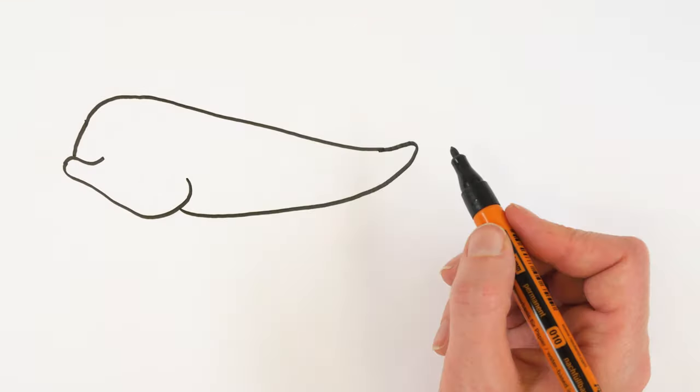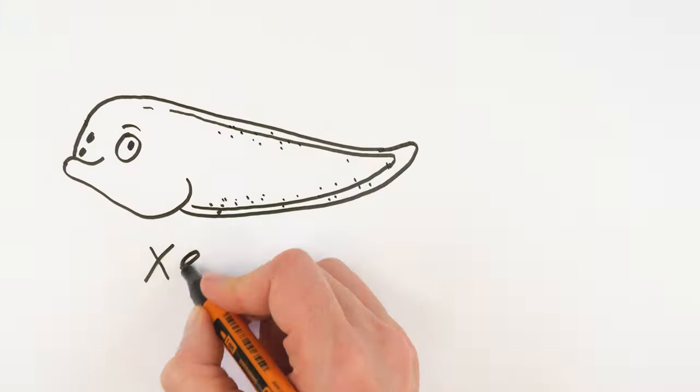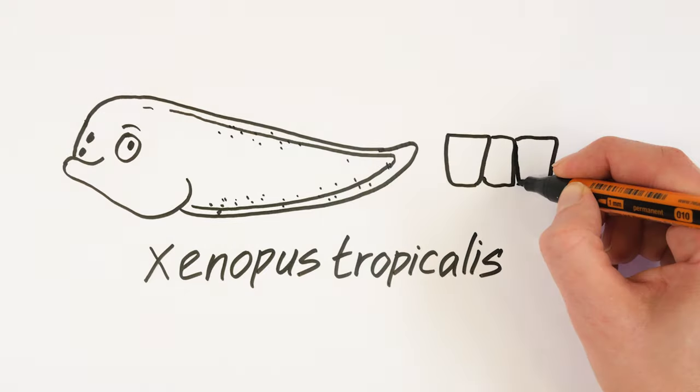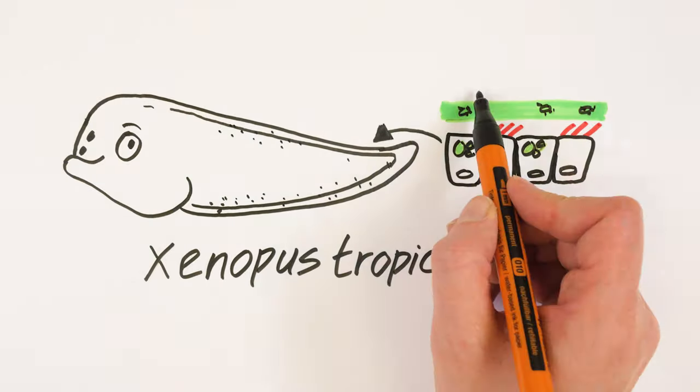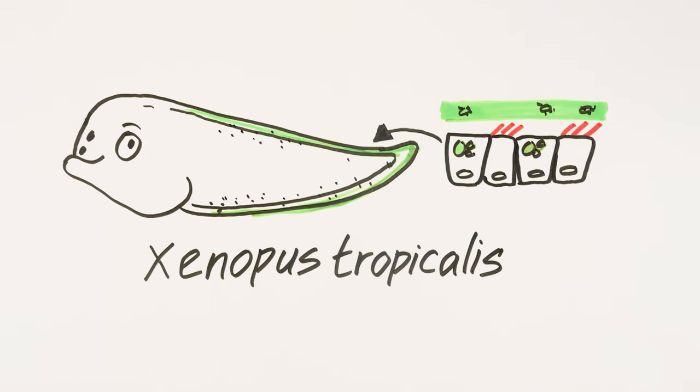In our lab we are developing a new non-invasive model to study mucociliary clearance. We use the tadpole stage of a frog called Xenopus tropicalis which has both mucus producing goblet cells and ciliated cells on the surface of the skin making it like an inside out human lung.